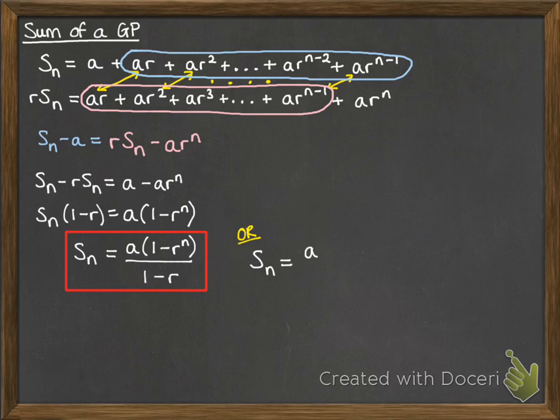You can also use this in an alternative form like this, where you'll notice the rn and the 1 have been swapped over on the top. And the r and the 1 on the bottom are reversed as well. So that is equivalent, but it only works if r is greater than 1. Sometimes you might want to use this one to make your numbers a little easier and avoid negatives.